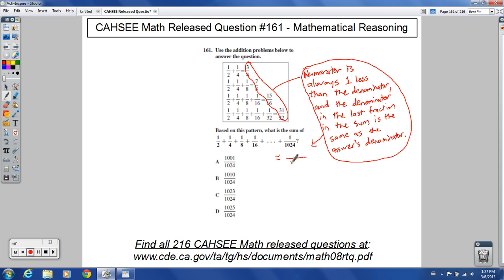The last denominator stays the same, 1024. The numerator is 1 less than that, which would be 1023.